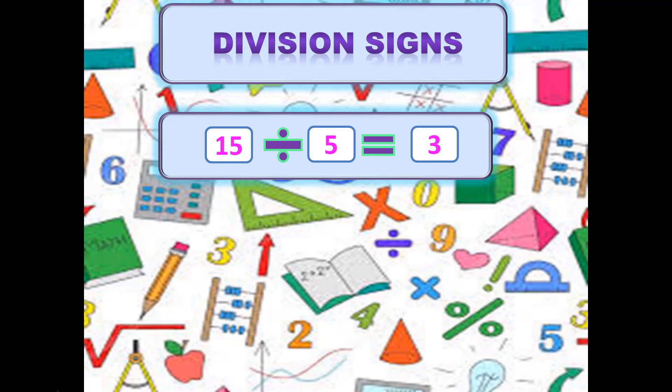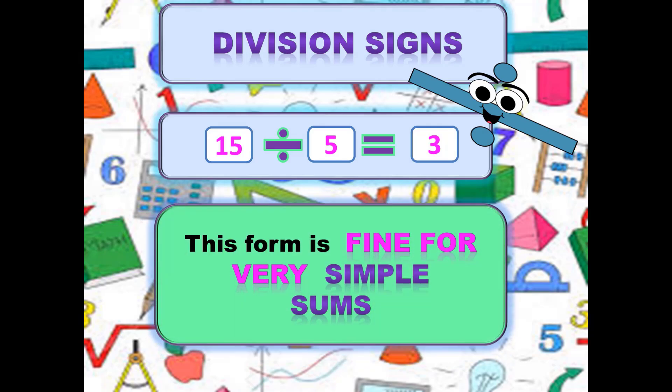Look at this: 15 divided by 5 equals 3۔ یہ question ایک straight line میں لکھا ہوا ہے — اسے ہم linear form کہتے ہیں۔ Linear form means question ہمارا ایک straight line میں لکھا ہوا ہے۔ Linear form میں ہمیشہ division کا ÷ sign use کریں۔ Linear form میں جو بڑا number ہو اسے division sign سے پہلے لکھیں اور جو چھوٹا number ہو اسے division sign کے بعد لکھیں۔ 15 بڑا number ہے تو پہلے، اور 5 چھوٹا number ہے تو بعد میں۔